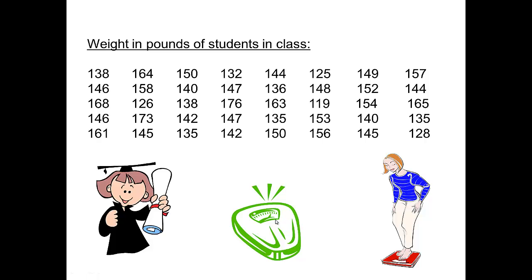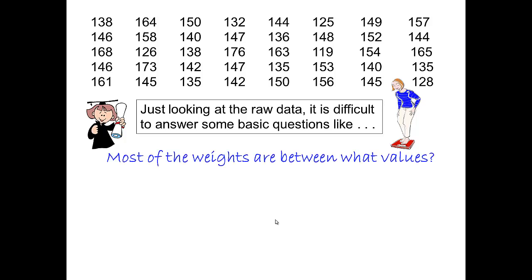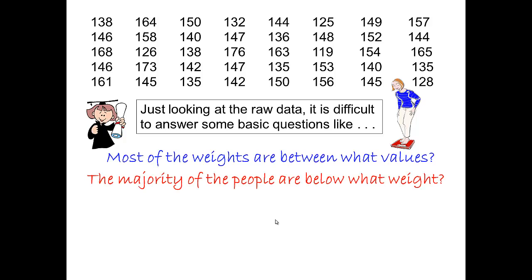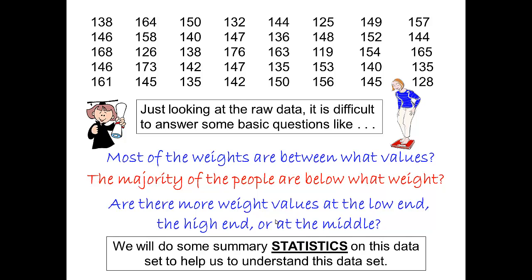Look at the data presented here — we have the weight in pounds of 40 students. This is what we call raw data: the list of numbers we have collected. Just looking at the raw data, it's difficult to answer basic questions like: most of the weights are between what values, or the majority of these people are below what weight, or are there more weight values at the low end, the high end, or in the middle?